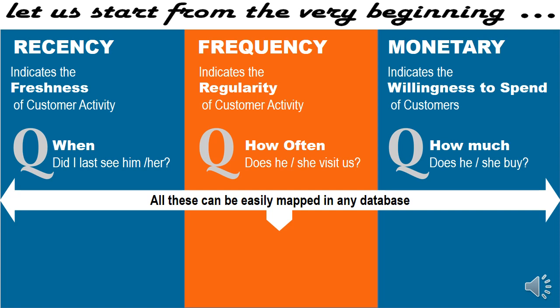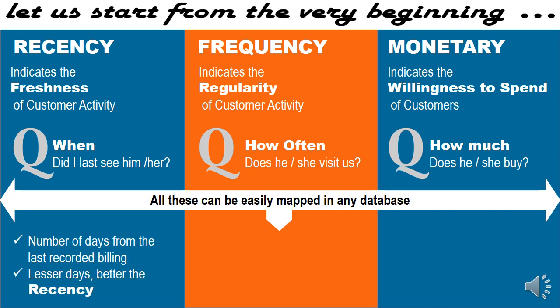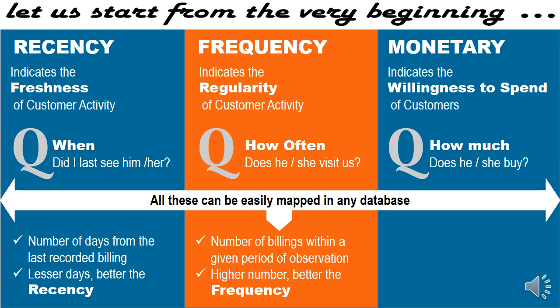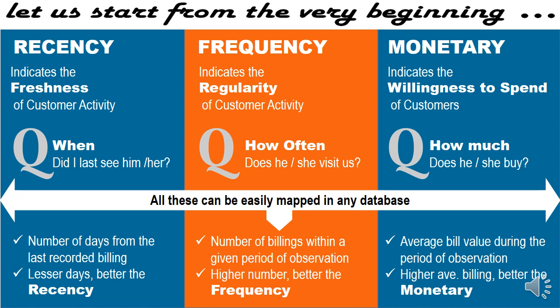In a modern database system where invoicing is completely electronic, this entire data can be mapped at the point of billing. Take recency — it is just the gap between today and the last recorded billing day. The lesser the number of days between the last recorded billing day and today, the better the recency. Frequency is the number of billings within a given period of observation — higher the number, better the frequency. And average bill value during the period of observation gives the monetary count — higher the average bill, better the monetary.